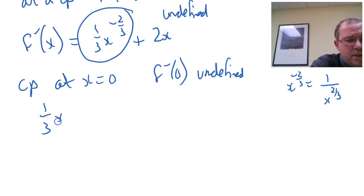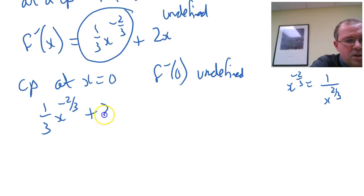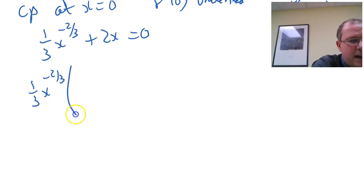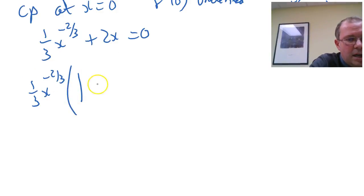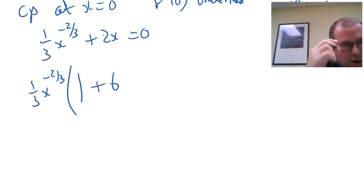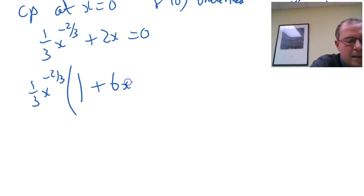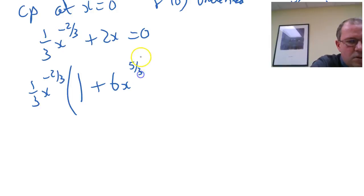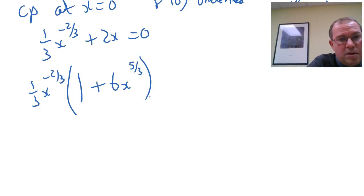Let's do the algebra, which is a little bit tricky. So one third x to the minus two thirds plus two x, I need to solve it equal to zero. I'm actually going to take out a third x to the minus two thirds as a factor. Clearly I need a six because six times a third is two. And I need x to whatever power, and when I times it by x to the minus two thirds I want it to be one. Clearly that's five thirds, because five thirds add two thirds equals three thirds, which is one.